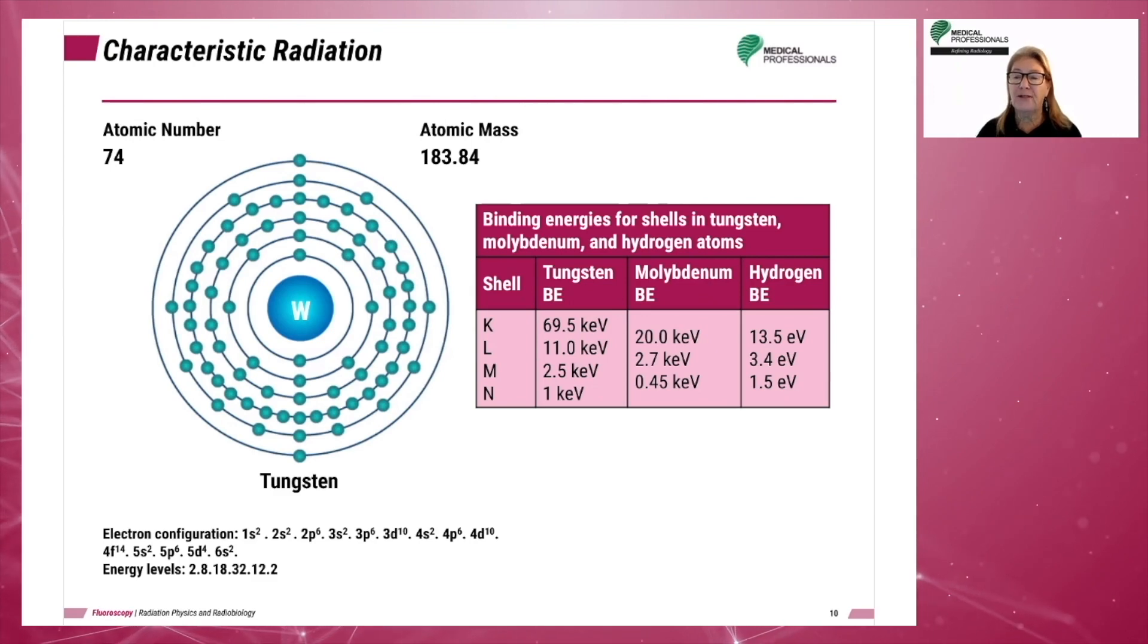When an inner shell electron is ejected, the atom will undergo a cascading of electrons to fill the vacant space to stabilize the atom. The L-shell electrons most often fill the empty space because they are closer and have a strong bond to the K shell. However, any filling electron can come from any of the six shells of the tungsten atom.